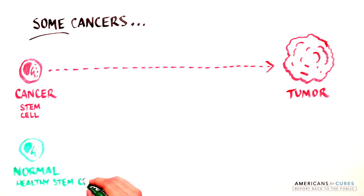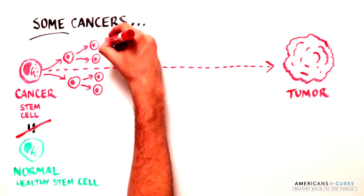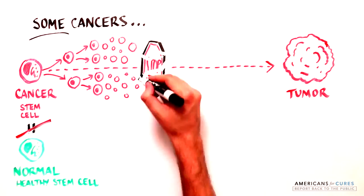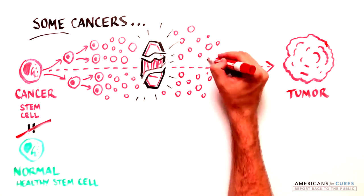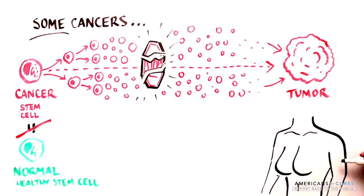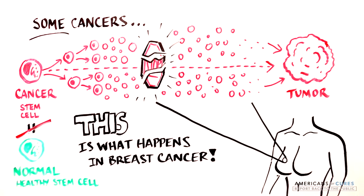Cancer stem cells are different from normal, healthy stem cells since they divide and survive outside of the body's control. These cells give rise to the many cancer cells that divide uncontrollably to form a tumor that spreads unchecked throughout the body. This happens in breast cancer, but how do these cancer cells divide seemingly unchecked?